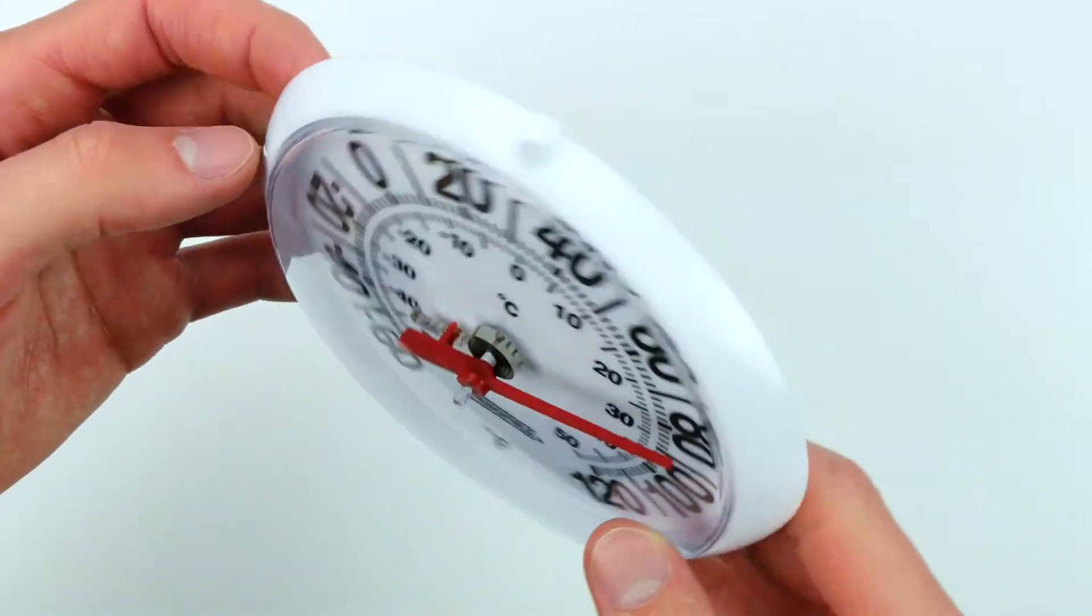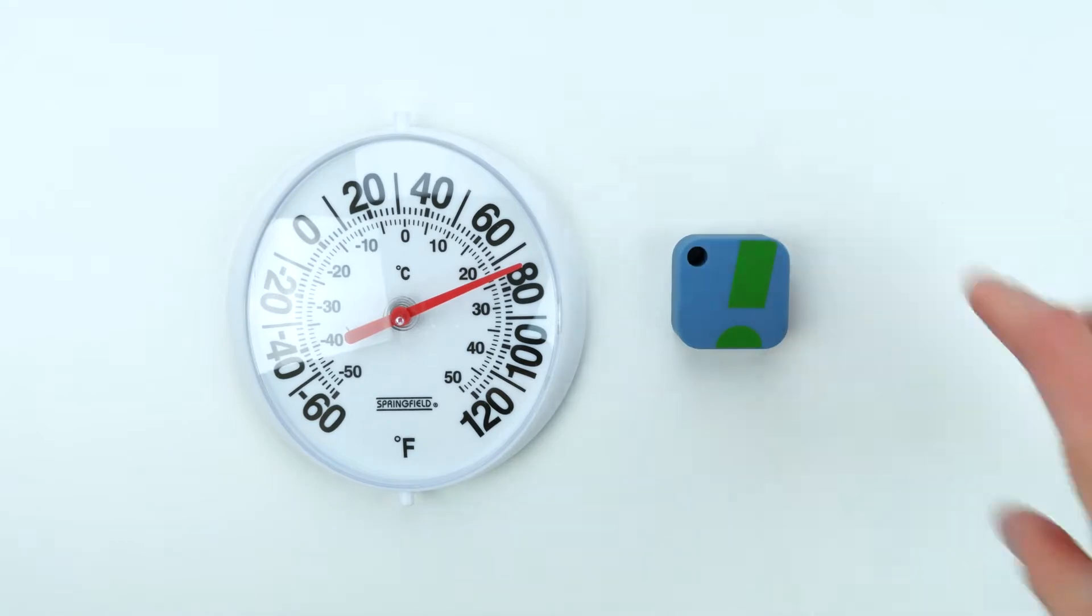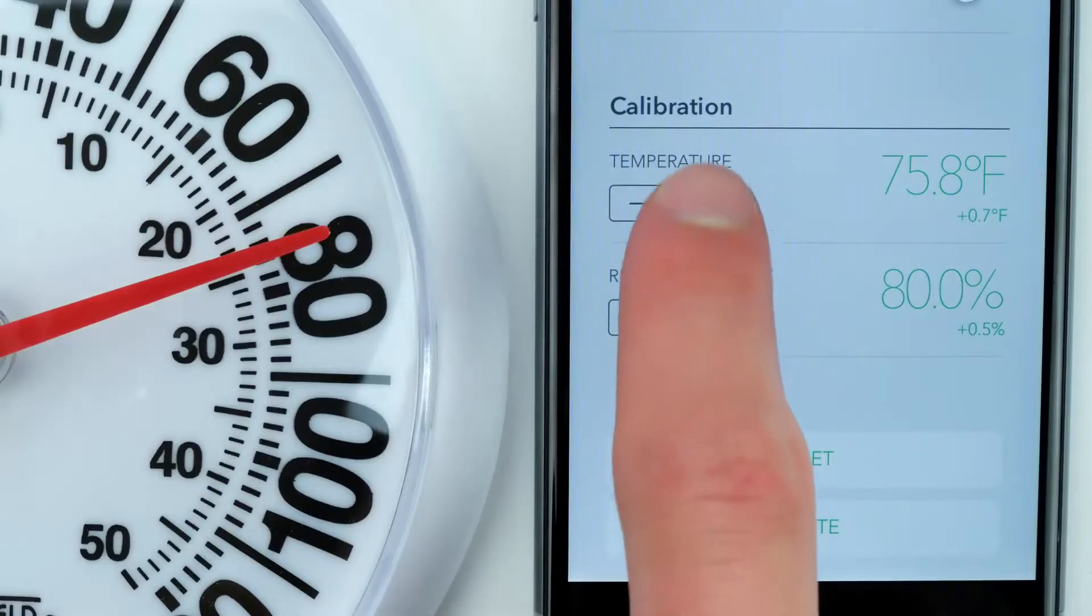If you have a trusted thermometer or hygrometer that you want to use as a reference, you'll just need to place your SensorPush next to the reference device, let both stabilize, and then adjust the sensor settings in the app until your SensorPush matches the reference.